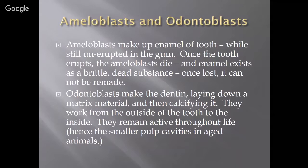Ameloblasts and odontoblasts are blast cells that build parts of the tooth. Ameloblasts make up the enamel — you can see that word within 'ameloblast' — and it happens while the tooth is still unerupted in the gum. Before the tooth grows out of the gum, that's when the enamel is made. Once the tooth erupts, the ameloblasts die, and that's why enamel exists as a dead substance. Once it's lost, it cannot be remade. If you destroy your enamel through sugary drinks, tea, or coffee, you can't get it back. If your teeth appear less white, it's partly because you have lost enamel and the dentin — a yellow substance — is showing through beneath.